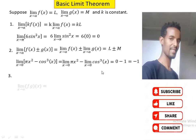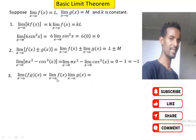Rule 3 is the product rule. The limit of f(x)·g(x) as x approaches a equals the limit of f(x) as x approaches a, times the limit of g(x) as x approaches a. Since the limit of f(x) is L and the limit of g(x) is m, we have L times m.